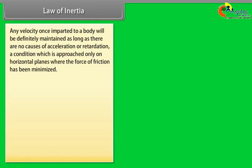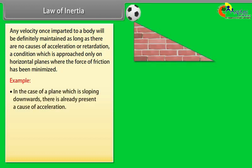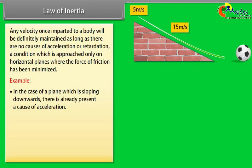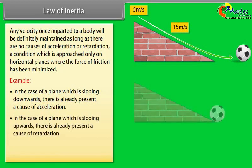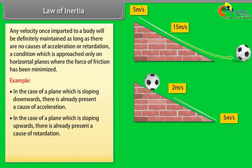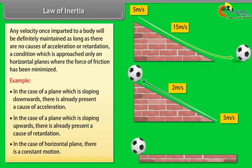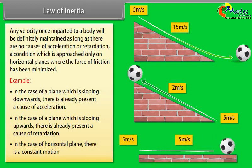Any velocity once imparted to a body will be maintained as long as there are no causes of acceleration or retardation — a condition approached on horizontal planes where friction has been minimized. In the case of a plane sloping downwards, there is a cause of acceleration. In the case of a plane sloping upwards, there is a cause of retardation. On a horizontal plane, there is constant motion.